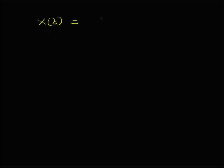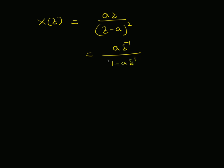The first step is to determine the corresponding Z-transform. X(z) can be written as az over (z − a)², since we have two poles and the denominator must be (z − a)². Dividing both numerator and denominator by z², we get az⁻¹ over (1 − az⁻¹)². That is the rational polynomial structure of the Z-transform.